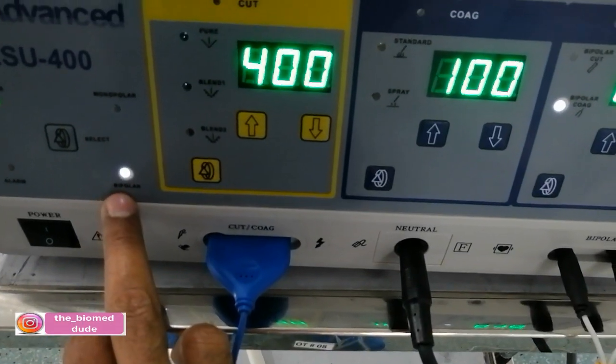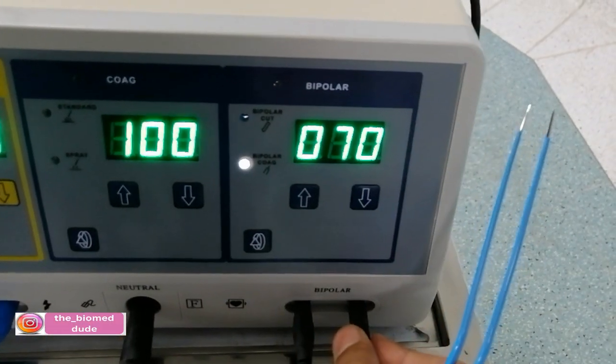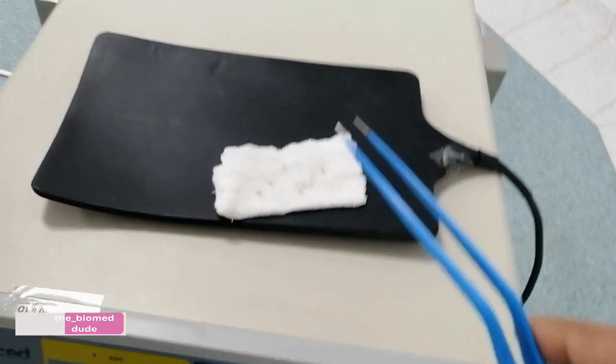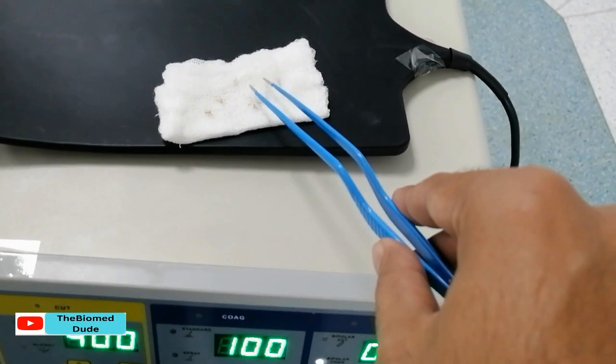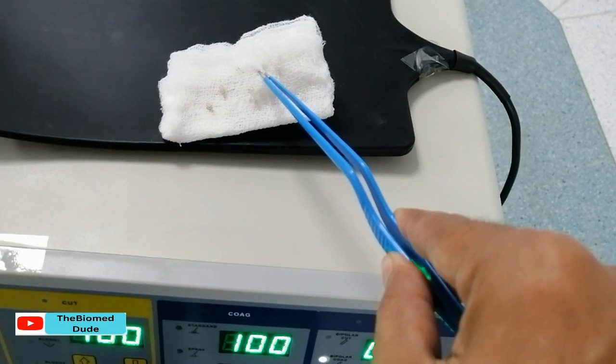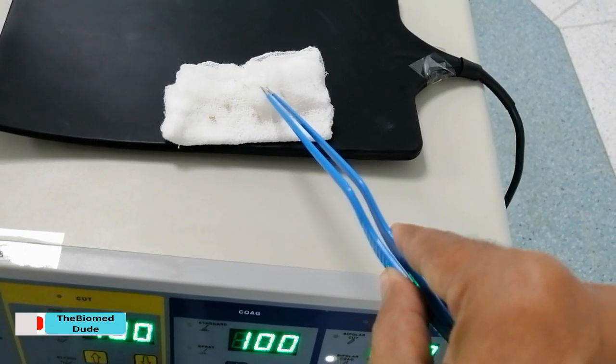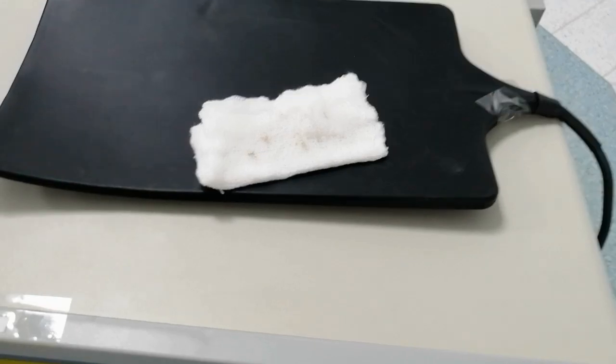Now I shift the mode to bipolar and connect the bipolar handpiece and use this on wet gauze piece. Press this vessel and press this switch, and this is the bipolar coagulation.